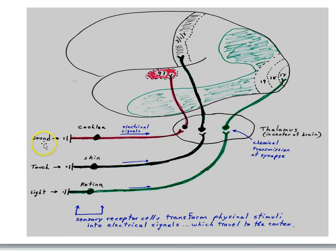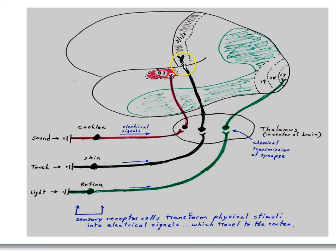Here we see the three sensory pathways coming in. Here's the world, and so light will activate cells in the retina. They will generate electrical signals, which are sent down the axon. There's a synapse in the thalamus — the thalamus is sort of deep within the brain; it's more than a relay station, but we'll just think of it as a relay station for now. Action potentials race on up to area 17 for vision.